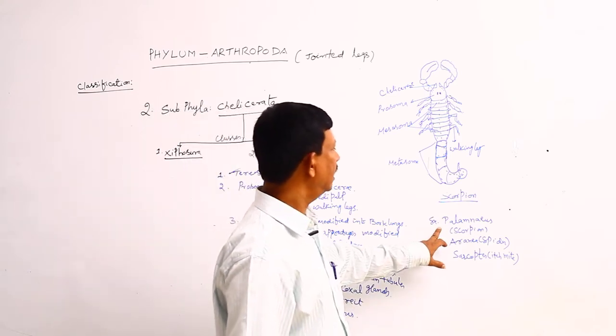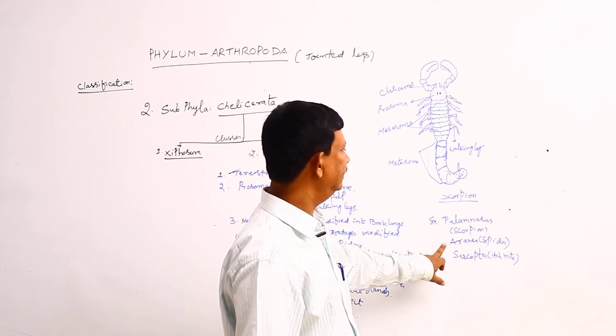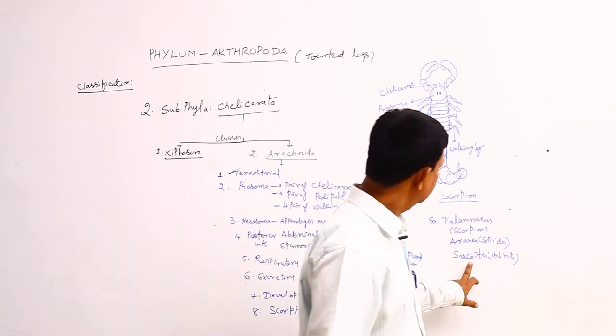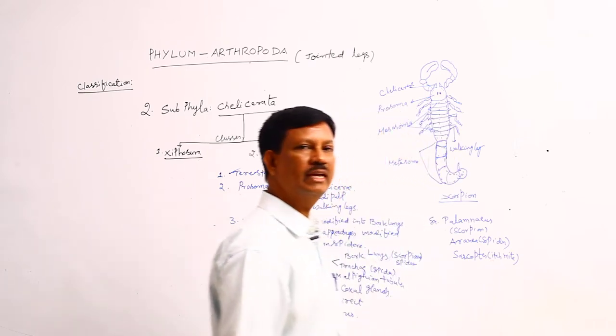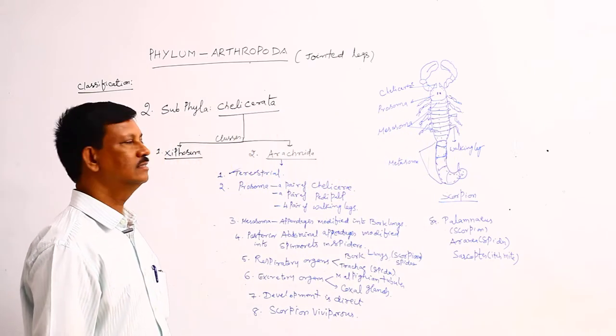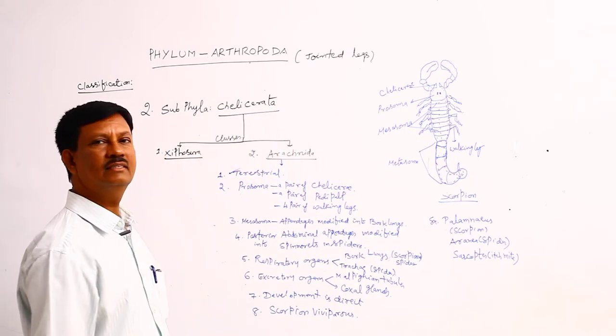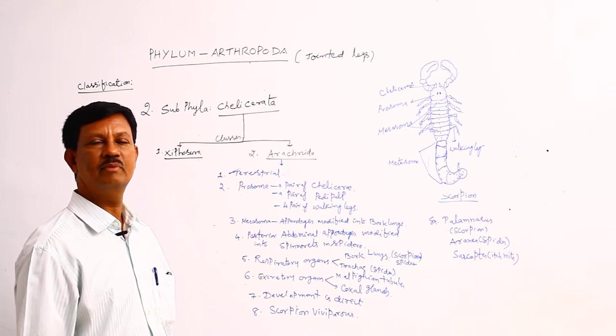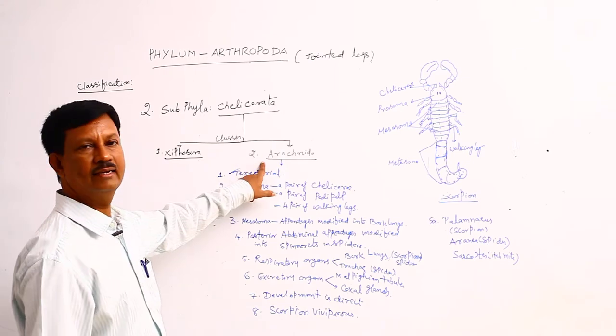The examples are Palaemneus - scorpion, Erinia - spider, and Sarcoptes. This is known as the itch mite. These examples come under this category. These are the main characters of the class Arachnida.